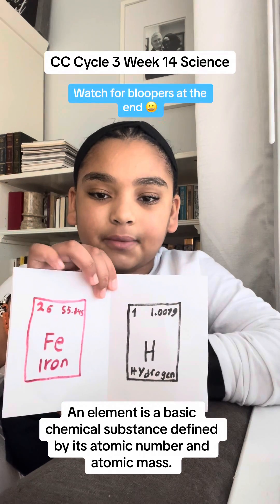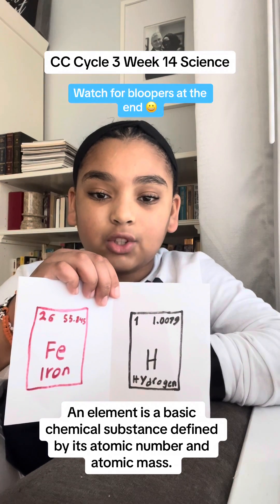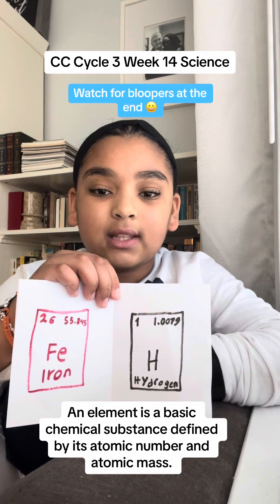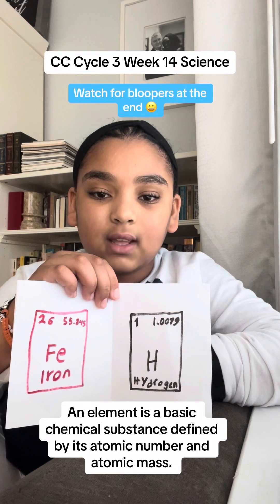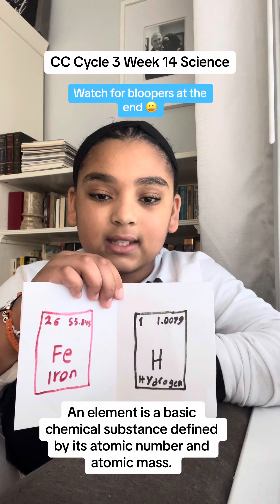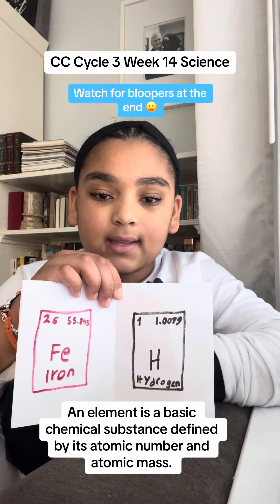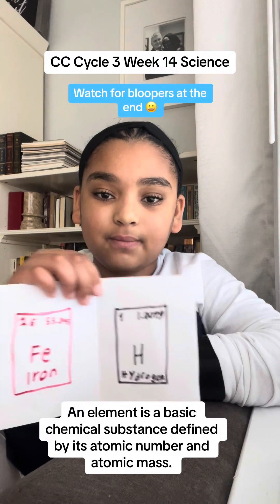Hydrogen and iron. On the top half of the element, you can see that it has the atomic number and atomic mass. The atomic number is the number of protons in the nucleus of an atom. And on the other side, you can see the atomic mass. The atomic mass is the number of protons and neutrons added together to make the weight of the element.